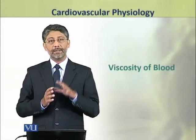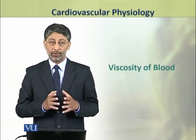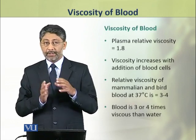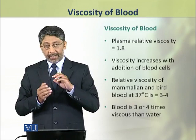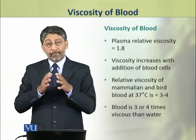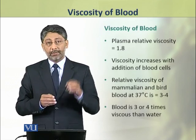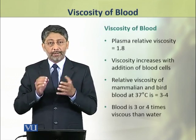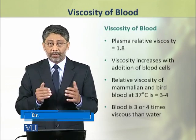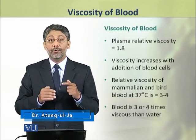In this topic we shall discuss the viscosity of blood and its effect on flow. Plasma relative viscosity is about 1.8, that is plasma is about 1.8 times more viscous than water. Viscosity of plasma increases when blood cells are added, so the viscosity of whole blood in mammals and birds is about 3 to 4 times that of water.